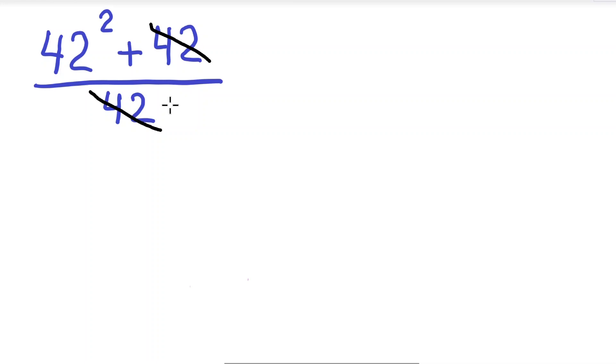As you can see, this 42 here is not being multiplied—instead it's being added. So division and addition are not reciprocals, so it does not cancel out.